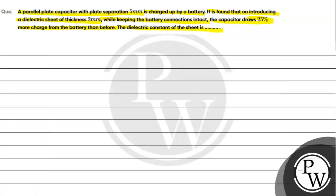For this question, the key concept is the effect of dielectric on capacitance. Without dielectric, the capacitance value is C = A·ε₀ / d, where d is the plate separation, A is the area of the plate, and ε₀ is the permittivity of free space.